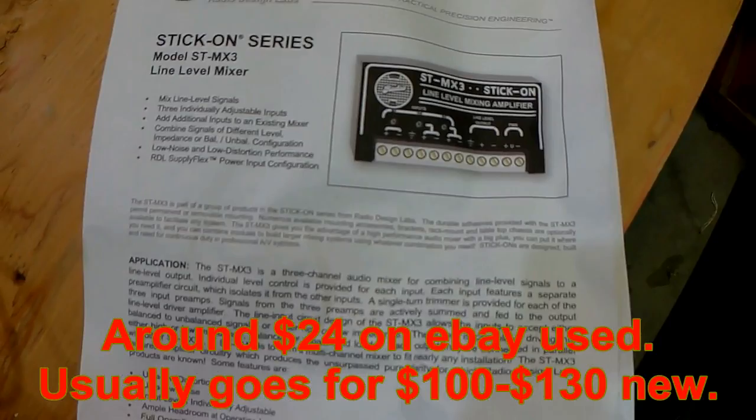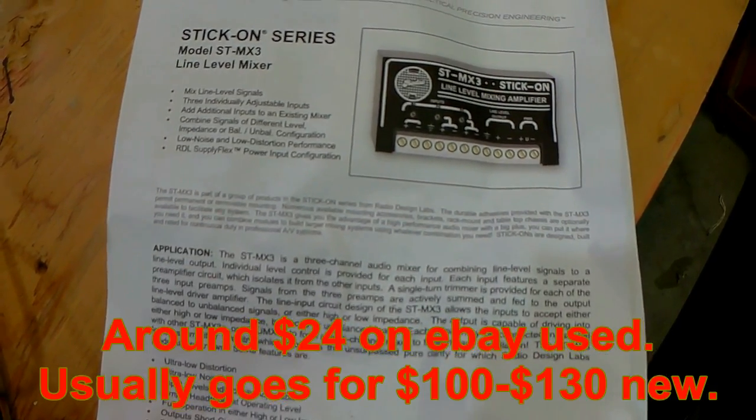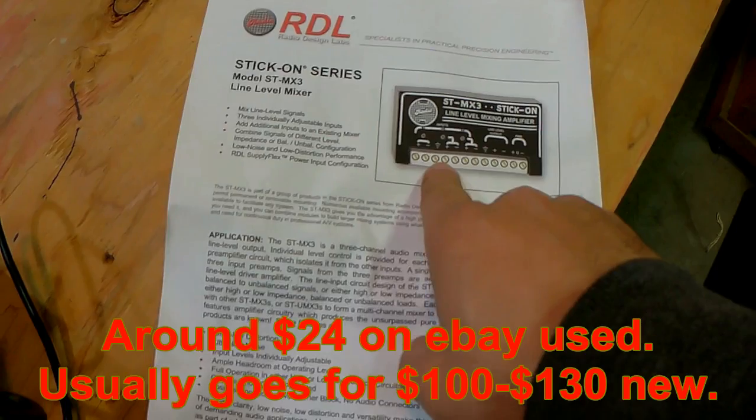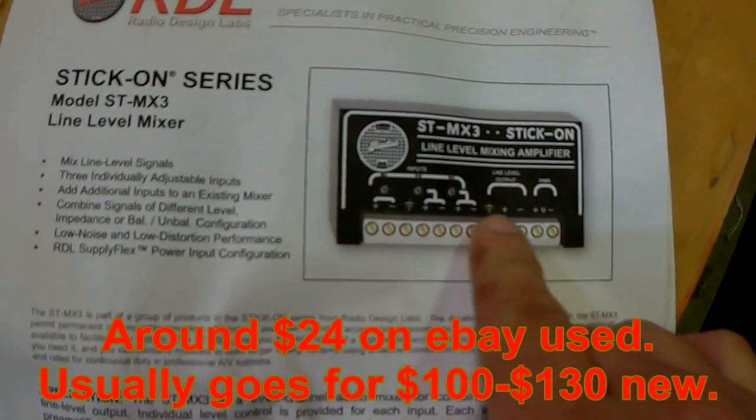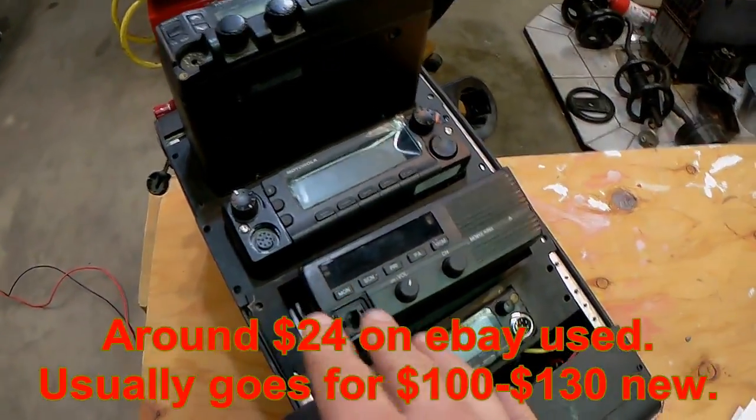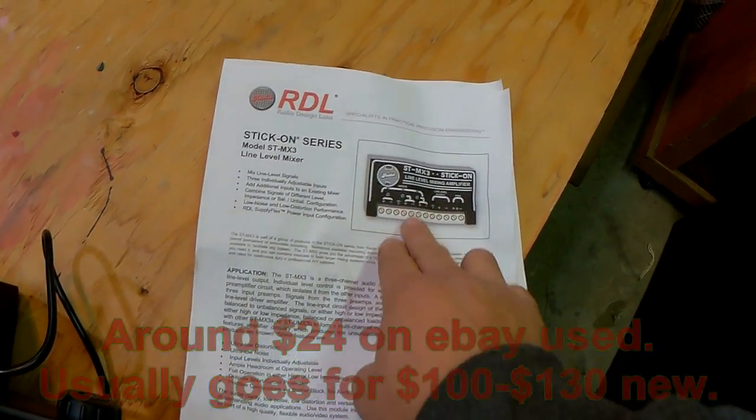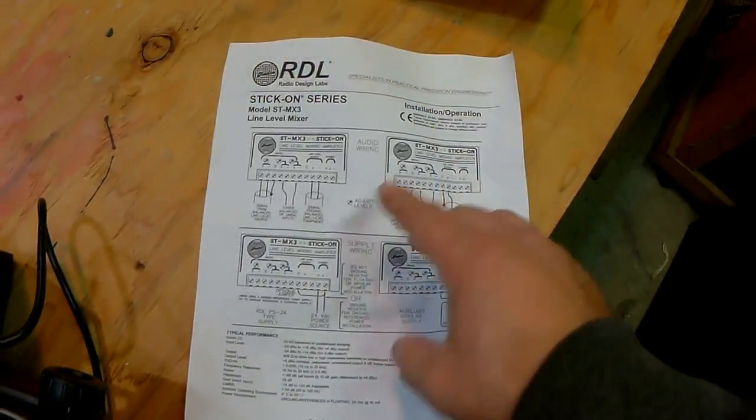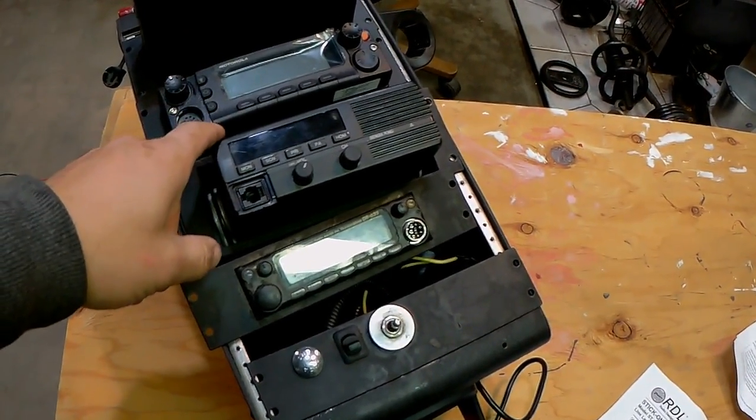Instead I use this device I found on eBay, Radio Design Labs, this particular model is the ST-MX3, a line level mixer. One of these devices has three inputs and one single output. To put four radios into one speaker I needed two of these, so two inputs per box, and the output daisy chains into another one.